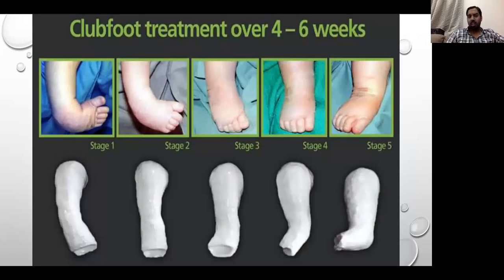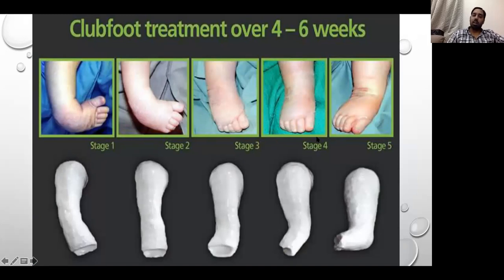Serial casting is performed over 4 to 6 weeks. The first, second, third, and fourth casts progressively correct the foot until a neutral position is achieved. The fifth cast is typically applied after performing a tendo-Achilles tenotomy.